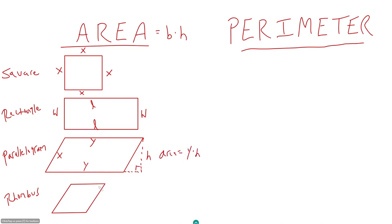The same is true for a rhombus, where all sides are the same length. Unlike a square, you cannot say the area is x squared, because x is not the height — you have to find that perpendicular height separately. The area would be x times h. So base times height works for all your different quadrilaterals.